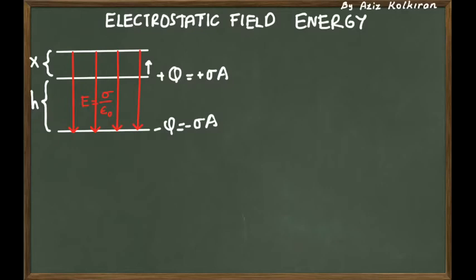If you do this — enlarge the space, the volume between the two planes — you don't change the strength of the electric field. The electric field strength is the same: sigma divided by epsilon zero, because there is no distance dependence in the electric field expression. It's constant — the same electric field. But you create an additional electric field in an additional region of space.